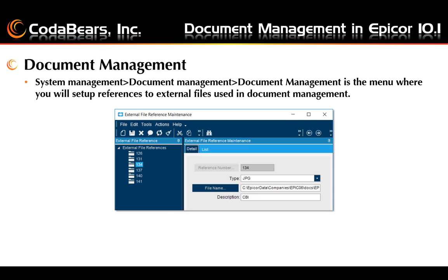Epicor has a Document Management menu item within the Document Management module, and this is where you will set up references to external files used in your document management. This is especially useful for documents used for certification and terms. Epicor automatically creates a reference number for files attached with the right-click option when adding an attachment in the customer form, for example. However, to add an external file reference on your own, you would click the new button, choose the type from the drop-down list, and enter the path and file name and description.